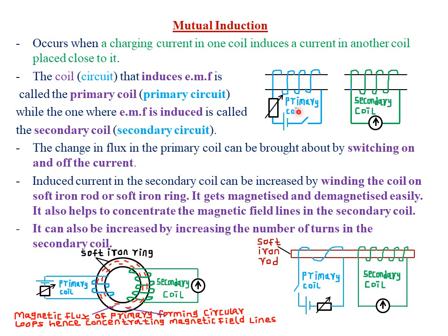The primary circuit induces some EMF or some current in the secondary coil. The coil or circuit that induces the EMF — remember in this chapter, EMF is used interchangeably with the induced current — is called the primary coil or the primary circuit. The primary circuit will always have a source of power; you can see we have our cell here. This is our primary coil.